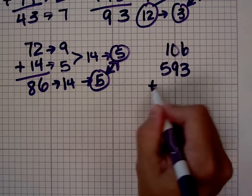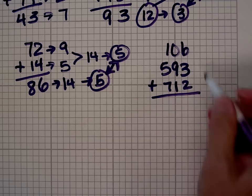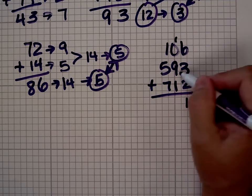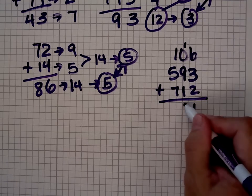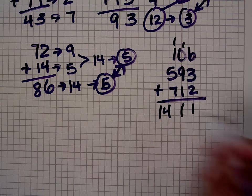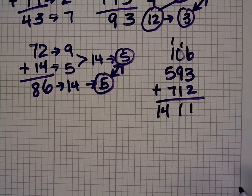106, 593, plus 712. I've got a 5 here, plus 6 is 11. I've got a 10 here, plus 1 is 11. I've got 7, 12, 13, 14. So my answer seems to be 1,411.